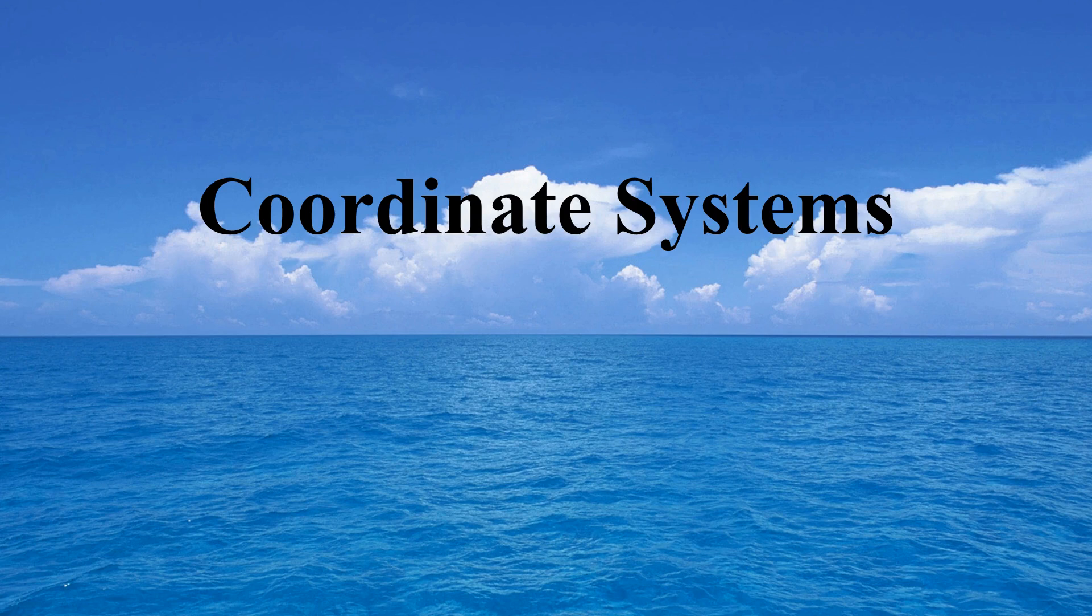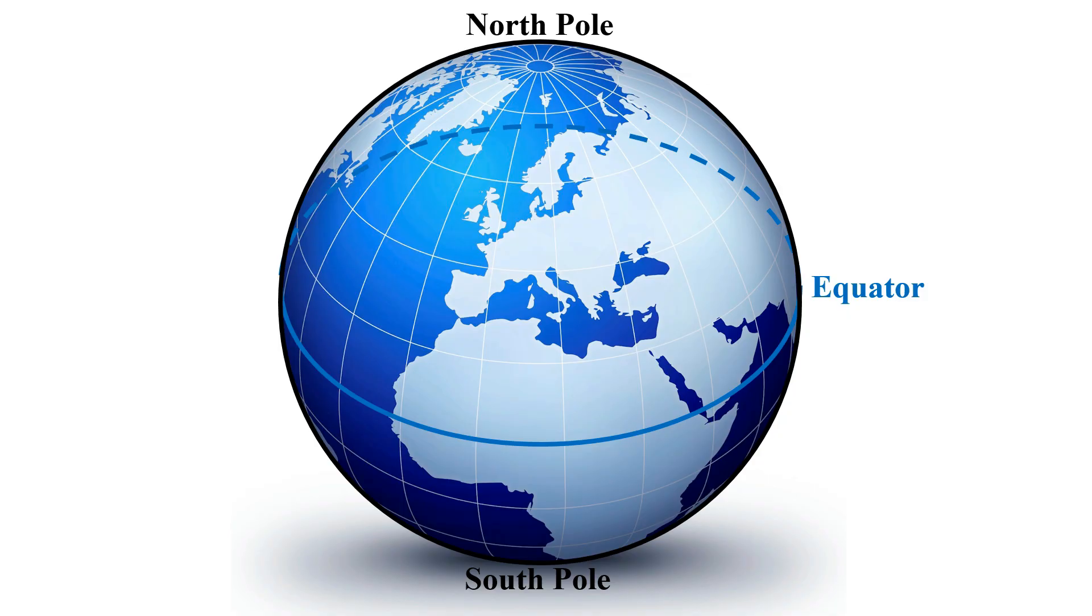In this video, we'll explain the coordinate systems used in celestial navigation. Every location on our planet has a unique set of terrestrial coordinates consisting of latitude and longitude. These are more commonly referred to as geographic coordinates.